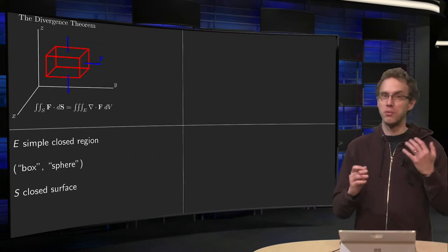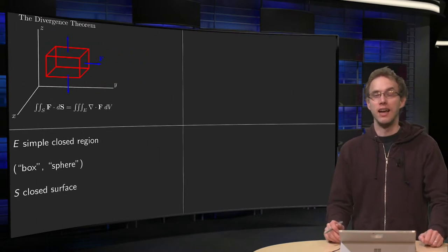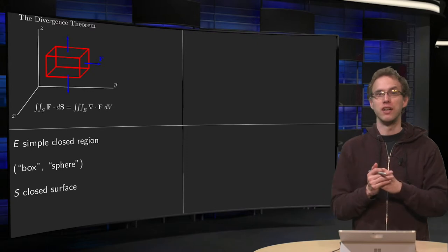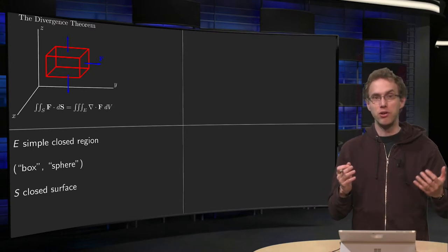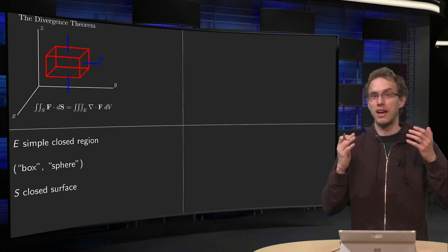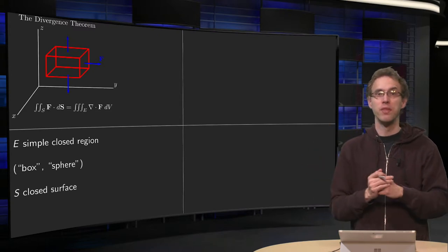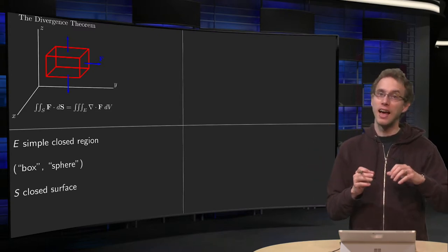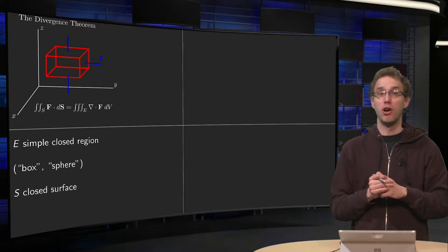So we have some conditions on E and on S. But for us we can just say E is a simple closed region, and with that we mean something like a box or a sphere intuitively. And S in the theorem has to be some closed surface.